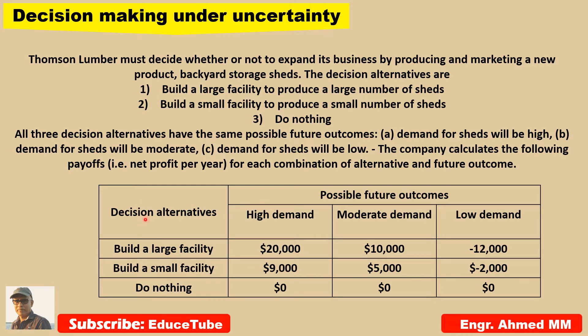We have three decision alternatives: build a large facility, build a small facility, or do nothing. This payoff table is calculated by the company, and these values represent net profit per year for each combination of alternative and future outcome. We will use five decision-making criteria to make a decision.